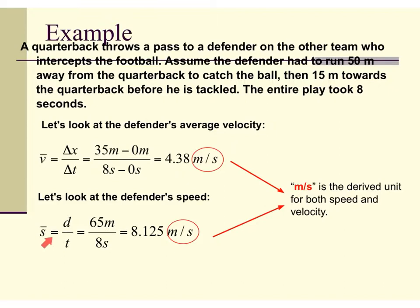Now, speed equals distance divided by time, so we look at the total distance the player ran: 50 meters out plus 15 meters back gives us a total distance of 65 meters. Divided by 8 seconds, we get a speed of 8.12 meters per second.